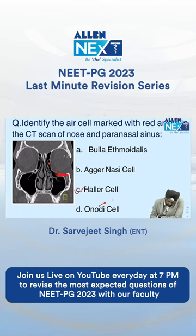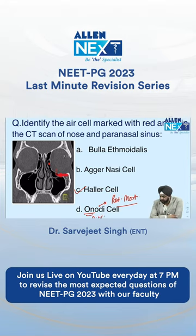Onodi cell is the posterior most cell, next to the optic nerve. Agger nasi cell is the anterior most cell, and it is next to the lacrimal.